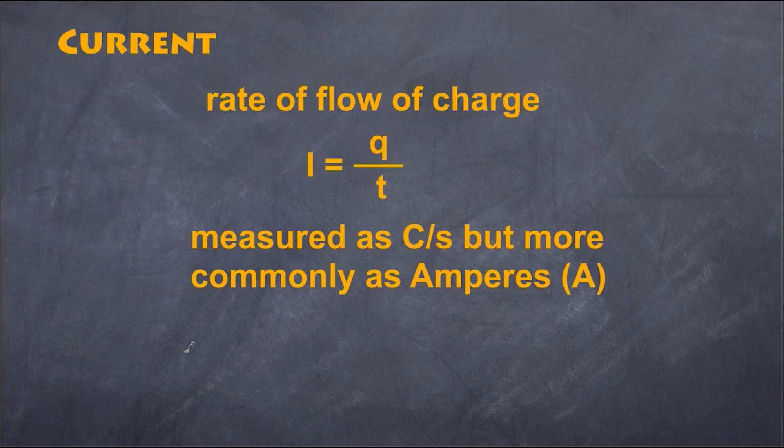Now let's talk about current—the rate of flow of charge. Mathematically it's the charge value divided by the time. The unit for charge is coulomb and the unit for time is second. So current is basically coulombs per second. One coulomb per second is equivalent to one ampere.